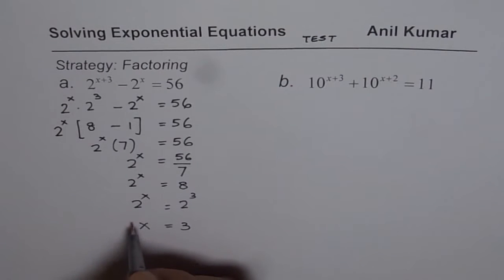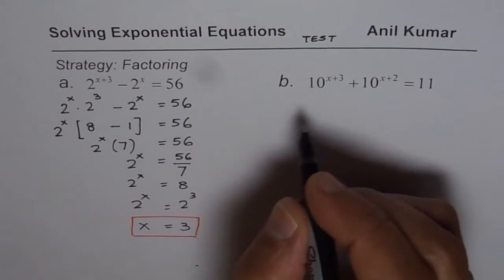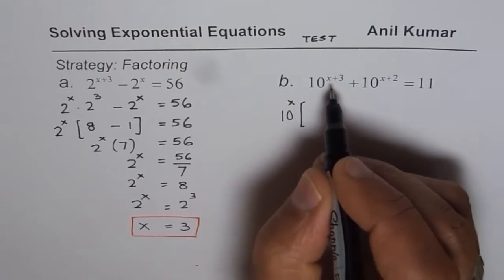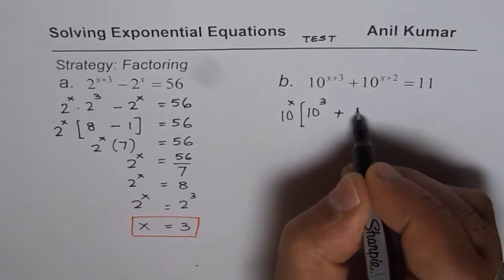So here we have used two strategies: to begin with we factored and then common base. Let's apply the same for the next question. We have 10 to the power of x as common, then we have 10 to the power of 3 left plus 10 square.